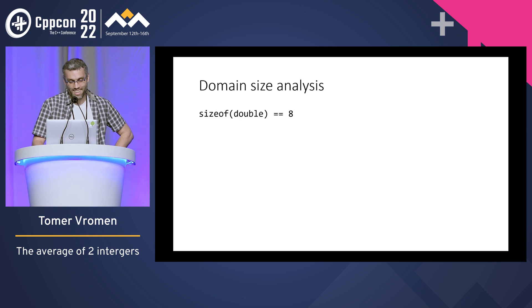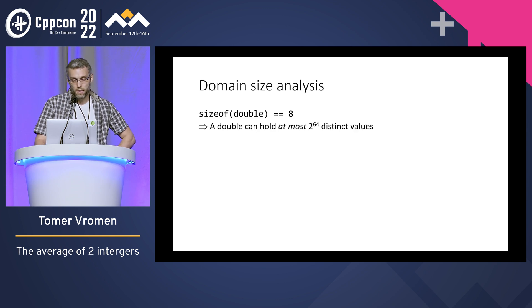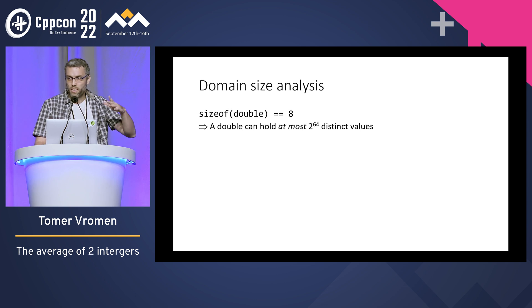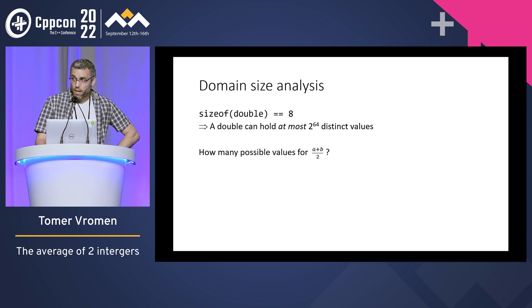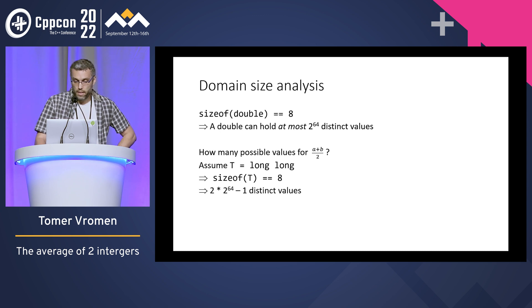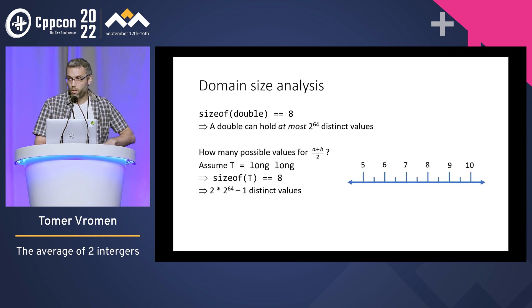Let's look at the domain size. The result is a double — eight bytes, 64 bits. A double can hold at most two to the power of 64 distinct values; I say 'at most' because there are some slots used by things like infinity, negative zero, and NaN. On the other hand, the thing we want to calculate — A plus B divided by two — how many possible values are there? Well, it depends on T. Let's assume long long, which is also eight bytes, 64 bits. The values we can get are almost twice two to the power of 64, because between each two integers we also have the half as a result, like 7.5.